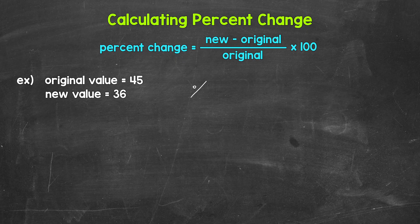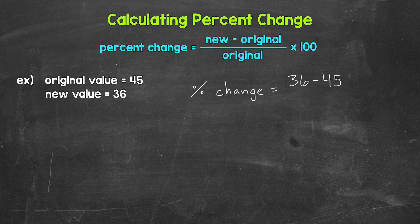So here, in order to calculate the percent change, we have: percent change equals the new value, 36, subtract the original value, 45, divide by the original value, 45, and then multiply by 100. Let's work through this now.